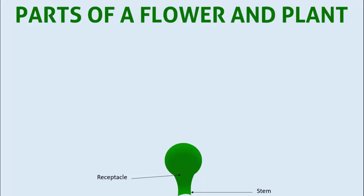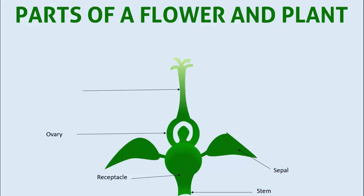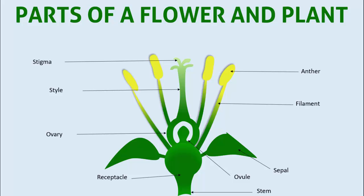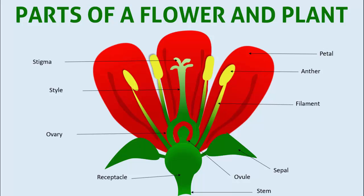In today's tutorial I'm going to show you a part of a flower and a plant. This is how the slide works: when I click the first part, the stem and receptacle will show, then the sepal will come, then the ovaries, stigma, and ovule, then the anther and filament, and finally the petals. I have created two slides, one with animation and one without animation.